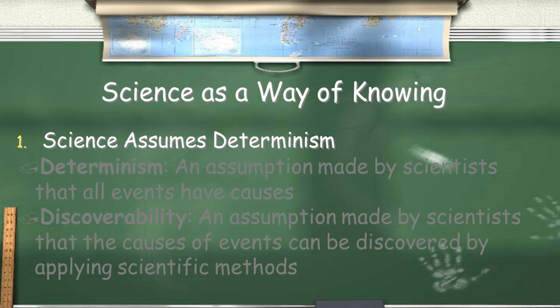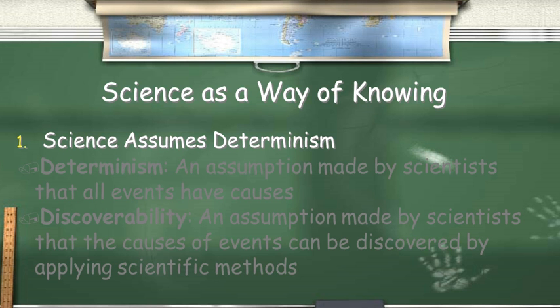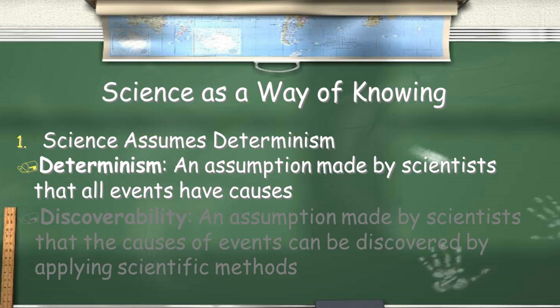Science assumes determinism, and the definition of determinism is an assumption made by scientists that all events have causes. Discoverability is an assumption made by scientists that the causes of events can be discovered by applying scientific methods.